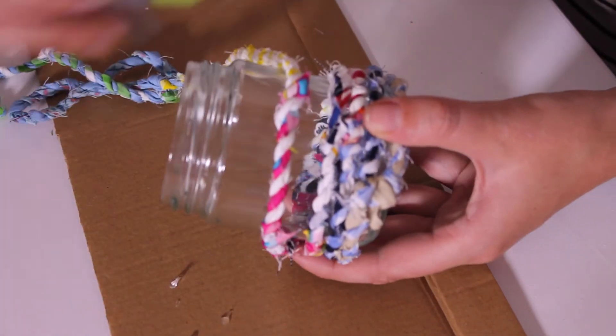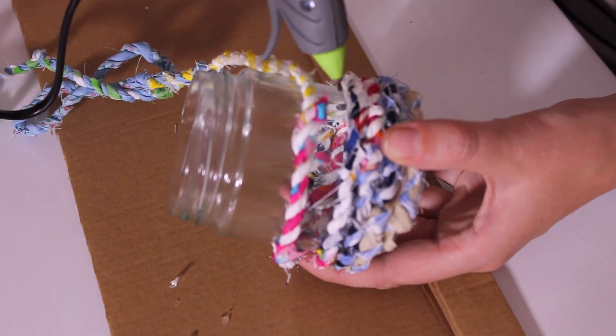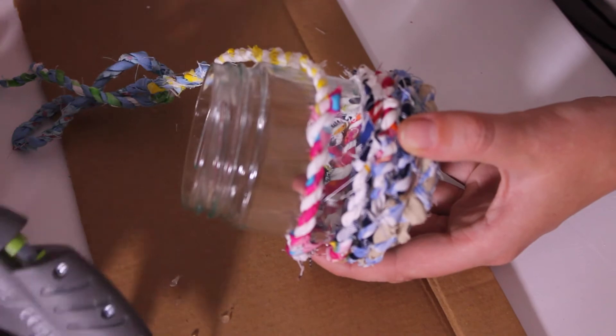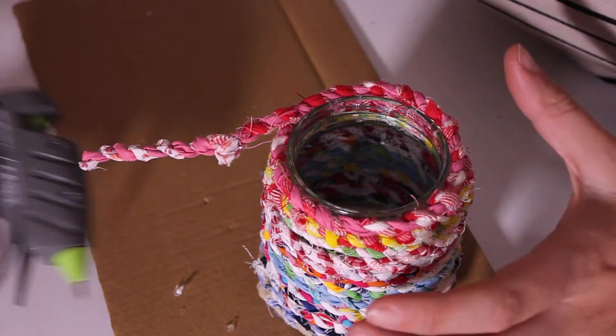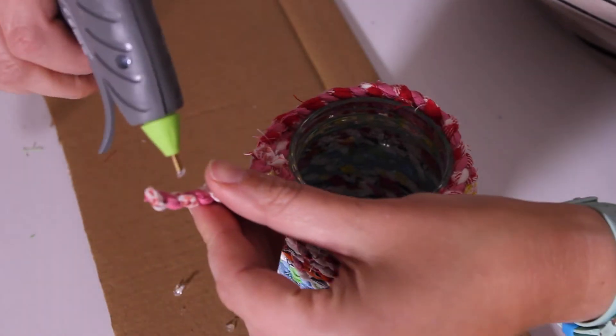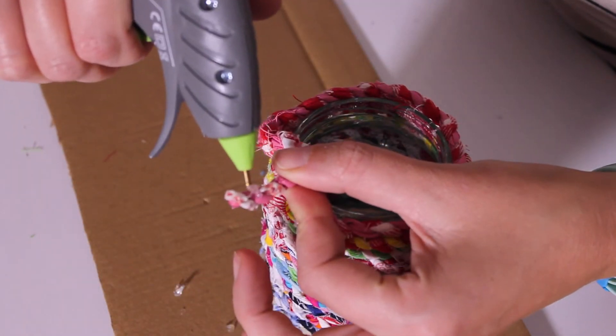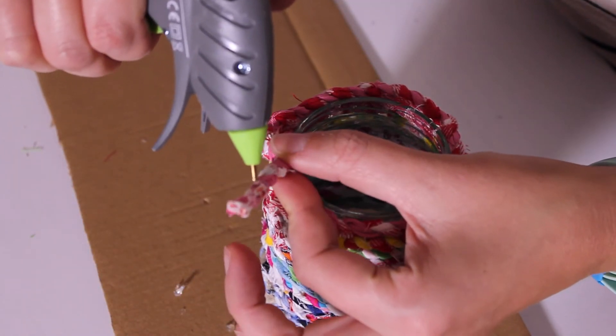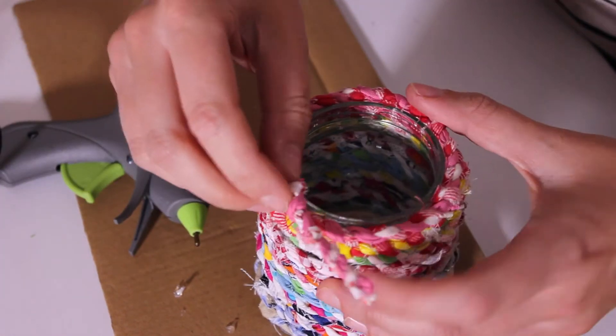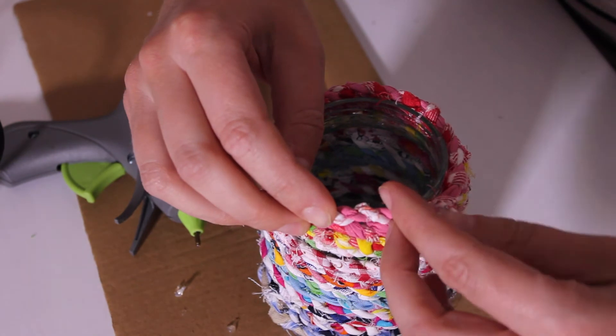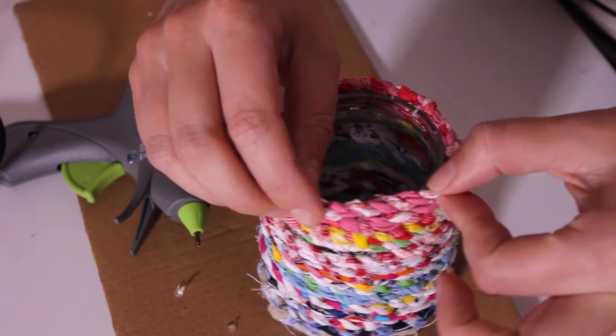So we wrap all the way around. And when you think it needs a bit of support, just add a bit of glue. So we work all the way to the top. And now be very generous with the glue when you're about to finish. I like to put this on the fabric itself. And then you just stick it in place, trying not to stick your fingers.